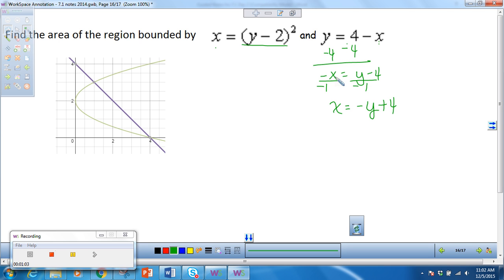I would have to set this x value equal to this x value. So I get y minus 2 squared is equal to negative y plus 4. Multiplying this out, I get y squared minus 4y plus 4 equals negative y plus 4. Moving this over to the other side, I get y squared minus 3y equals 0. Factoring, so I get y is 0 and y is 3.